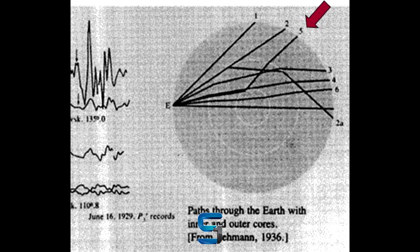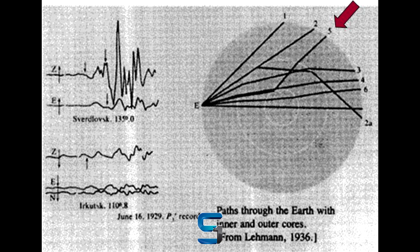Eventually, she had an idea: a solid inner core inside the soft molten outer core, which would reflect some P waves, causing them to end up in the shadow zone.